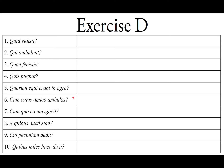Sententia sexta: Cum cuius amico ambulas? We have the preposition cum, which takes the ablative case to show accompaniment. Cuius is the genitive — you can tell by the heteroclite -ius ending. That's the genitive of either the relative pronoun or the interrogative pronoun; here it's the interrogative. It's the singular of quorum: where quorum is the plural 'whose,' cuius is the singular 'whose.' With whose friend are you walking?